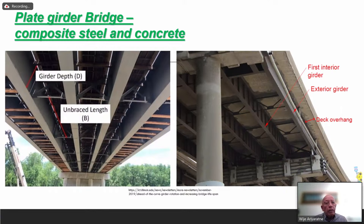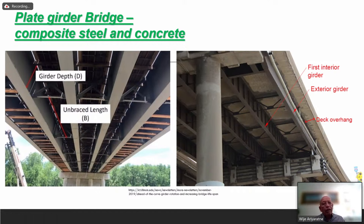Composite steel and concrete plate girders are shown here. The girder depth and unbraced length between bracings are important — the depth-to-length ratio matters to prevent buckling. If the unbraced length is longer, each individual plate girder will try to buckle. You must design at what spacing the bracings should be placed. This shows the overhang concrete part, internal girders, and external girders.